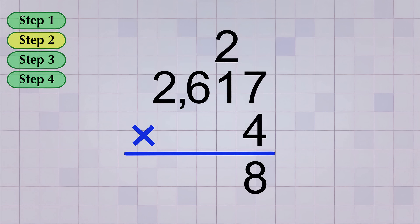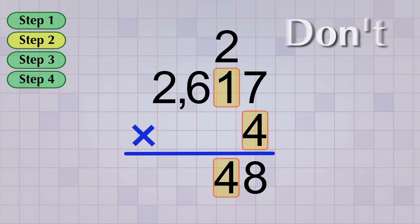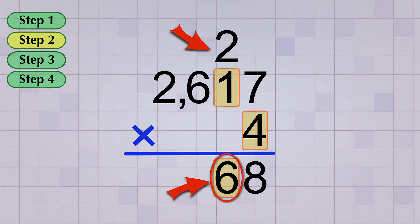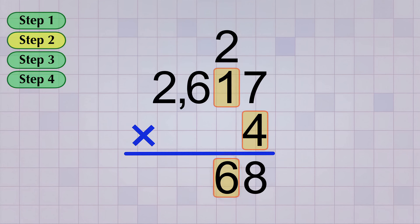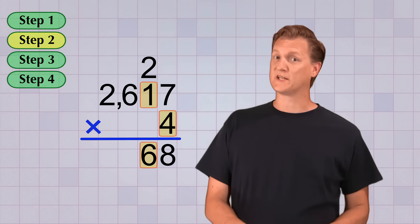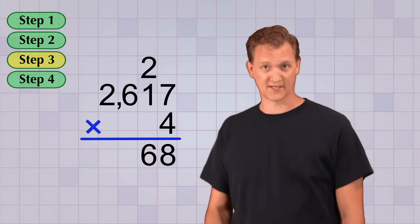Now we can do the second step. We multiply the bottom digit by the next digit in the top number. 4 times 1 equals 4. But don't forget about that digit we carried. We need to add that to our answer from the second step. So 4 plus 2 gives us 6. This time we have a one-digit answer, so we don't need to carry. We can just move on to the next step.